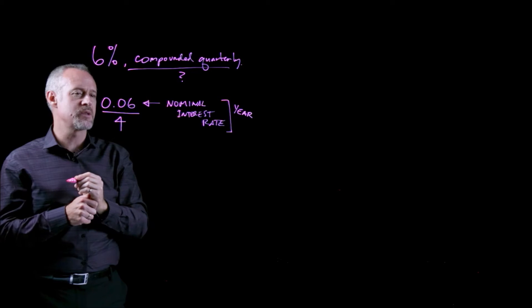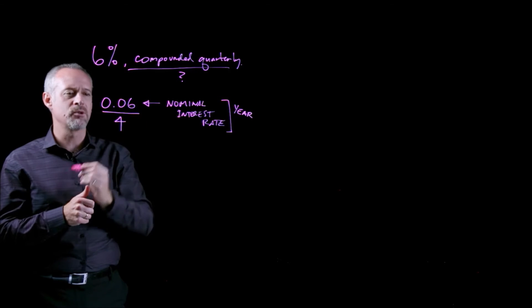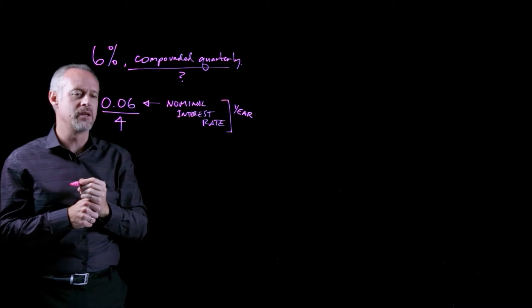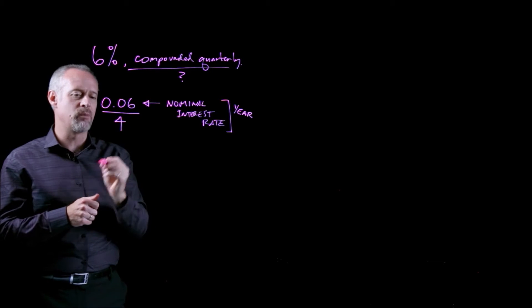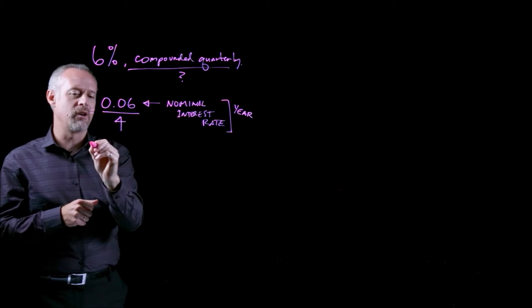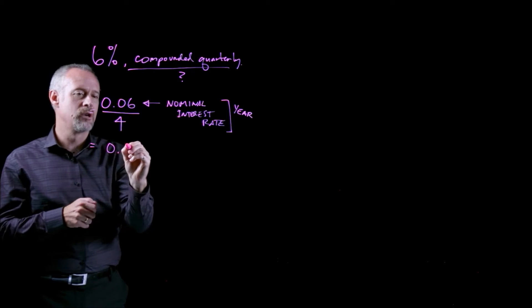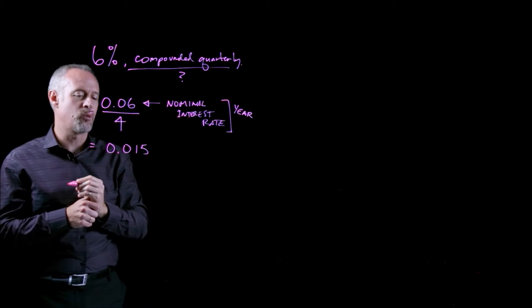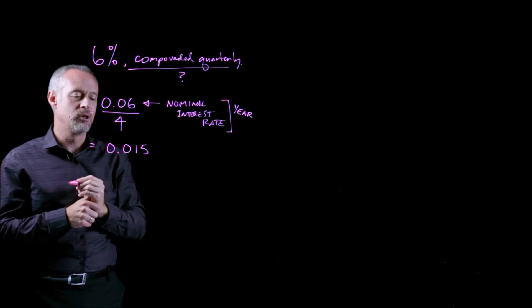The nominal interest rate refers to that sort of interest rate we're quoting for that year. And the number of compounding periods is how we'll actually do the calculations. So if we look at this example, we'll say 6% compounded quarterly, we'll take 6% divide by 4, that actually will give us a value of 0.015 or 1.5%.